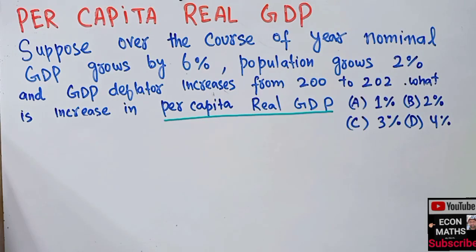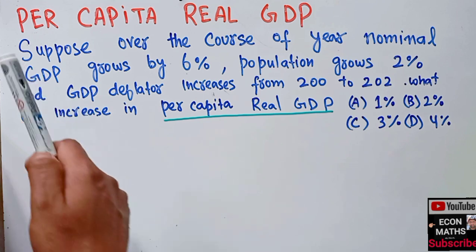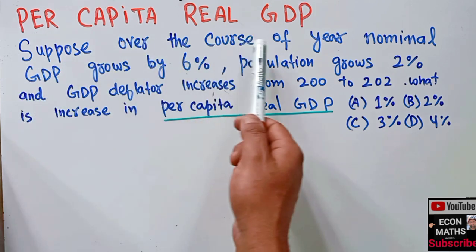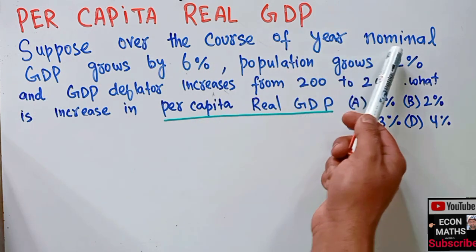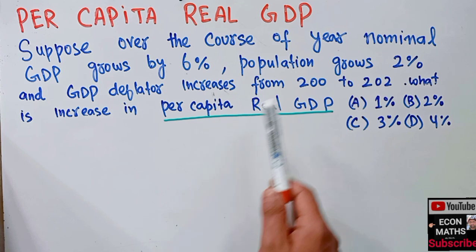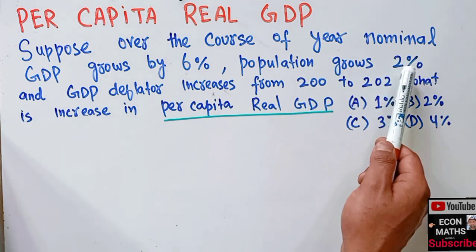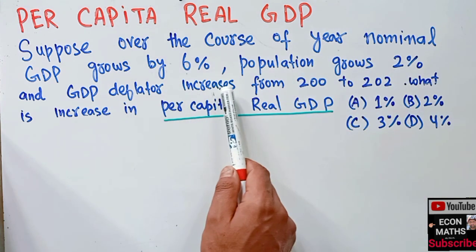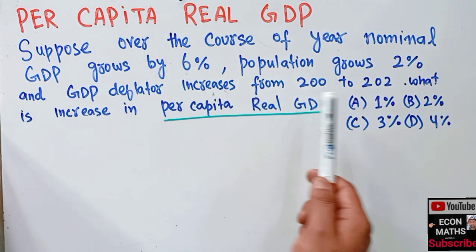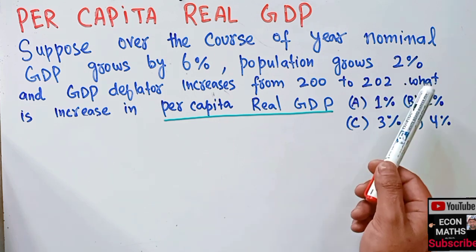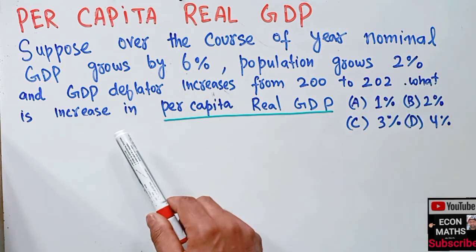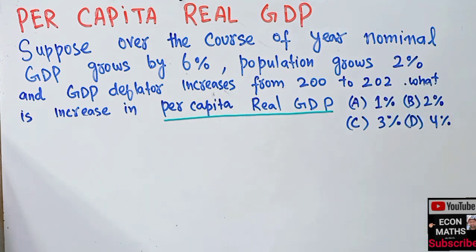In this video we will learn how to calculate the increase in per capita real GDP. The question is: suppose over the course of a year, nominal GDP grows by 6%, population grows by 2%, and the GDP deflator increases from 200 to 202. What is the increase in per capita real GDP?